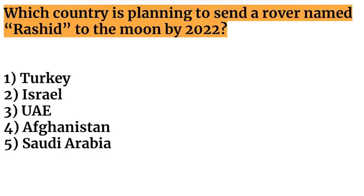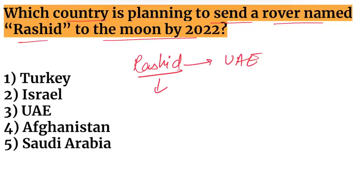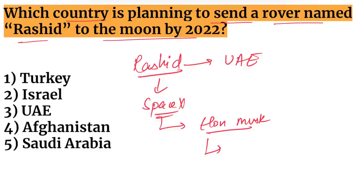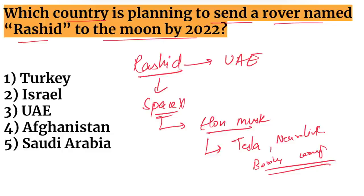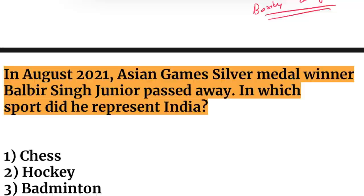Next question: which country is planning to send a rover named Rashid to the moon? Rashid is a rover that will be sent to the moon by UAE, using rockets from SpaceX — the company of Elon Musk. Other Elon Musk companies include Tesla, Neuralink, and The Boring Company.